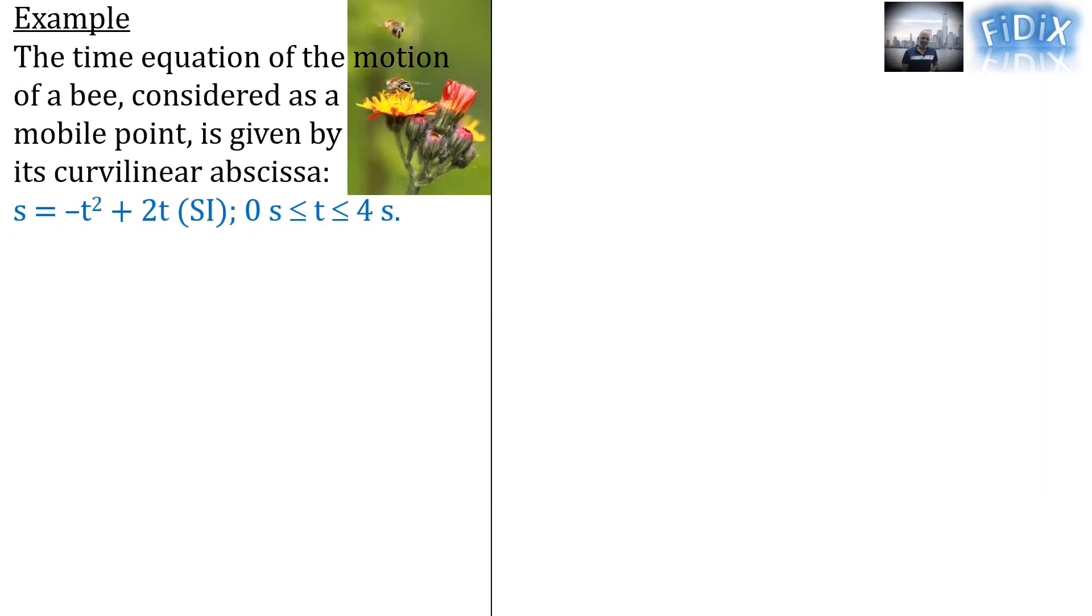Example: the time equation of the motion of a bee, considered as a mobile point, is given by its curvilinear abscissa, s equals minus t squared plus 2t in the SI, where the date t lies between 0 seconds and 4 seconds. Question 1: Calculate its curvilinear abscissa at t equals 3 seconds.